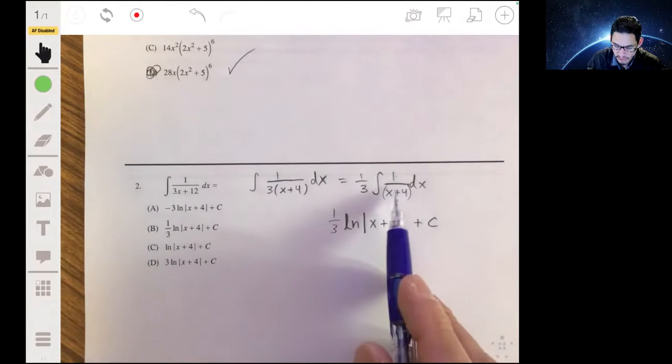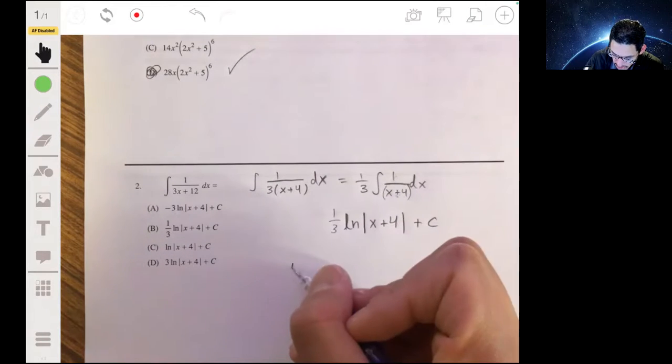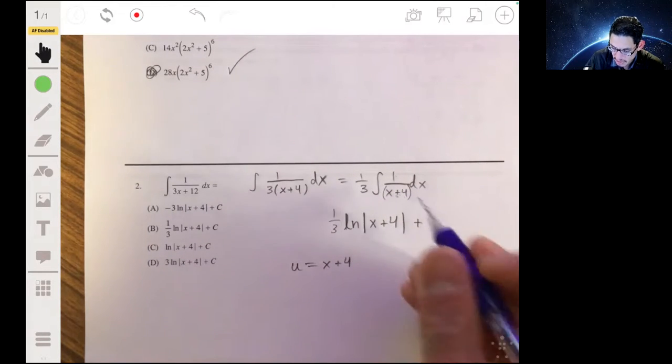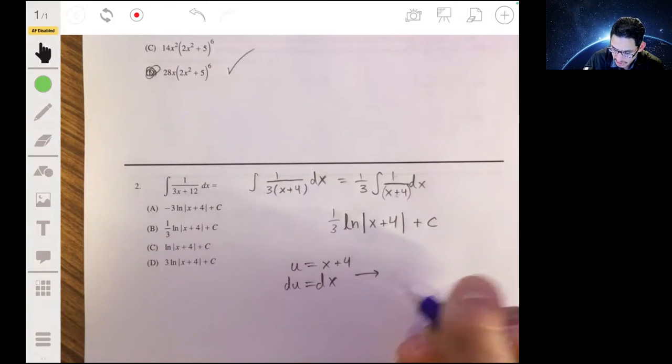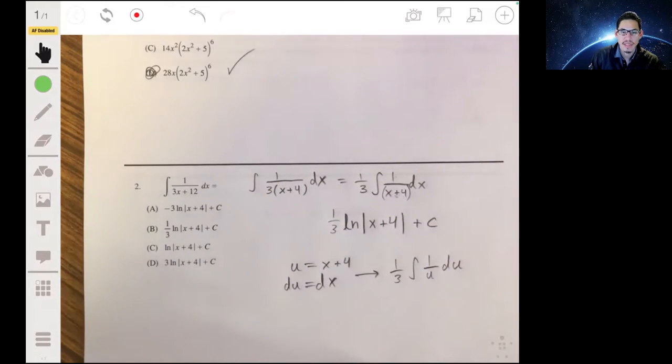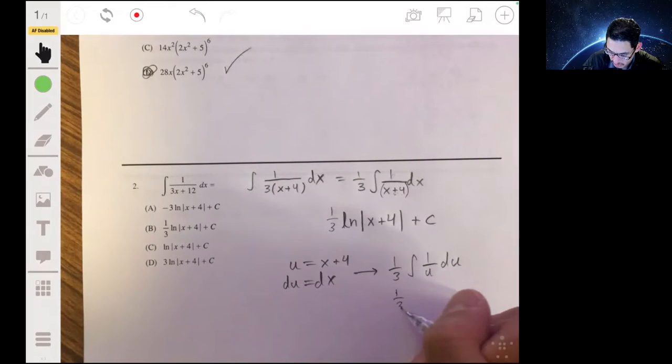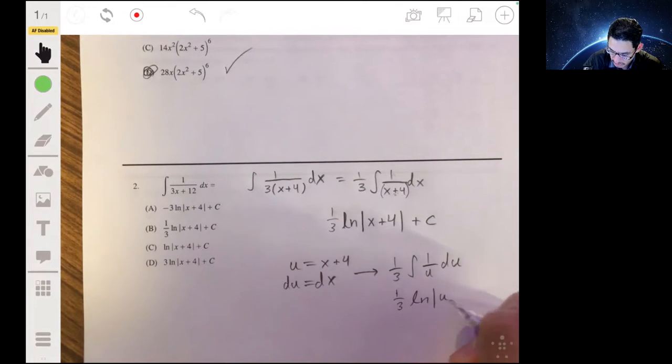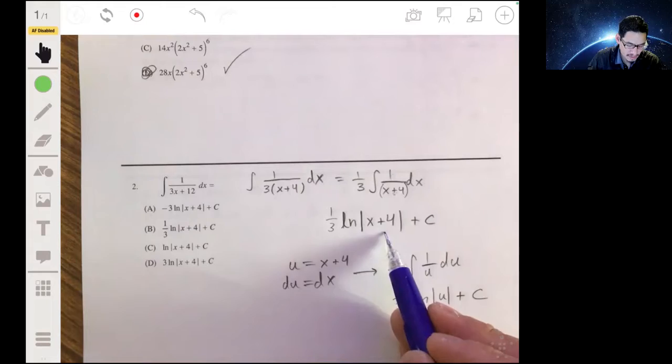Now if you want me to prove this, it's pretty simple. We just make u equal to x plus four, and du would just be dx. And this essentially just becomes one third times the integral of one over u du. And the antiderivative of one over u is the natural log of absolute value of u. So this becomes one third times the natural log of absolute value of u plus your constant. And you replace u with the x plus four, and you get this.